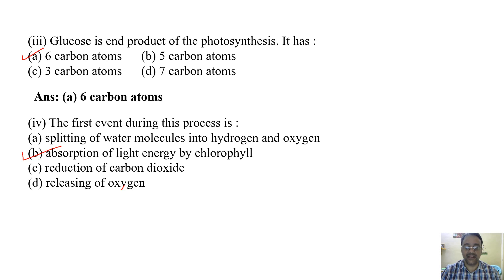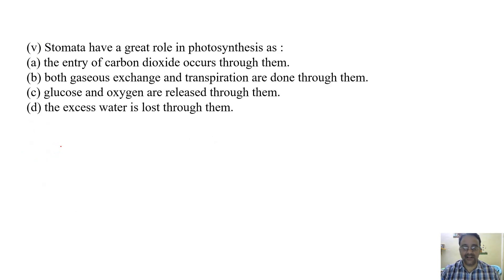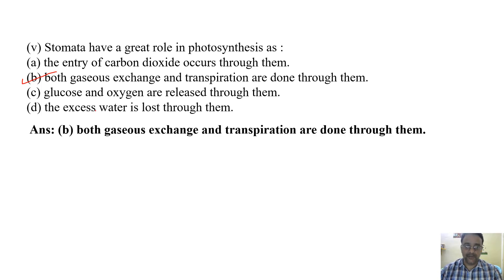Now moving towards the last question: Stomata have a great role in photosynthesis as - (a) the entry of carbon dioxide occurs through them, (b) both gaseous exchange and transpiration are done through them, (c) glucose and oxygen are released through them, (d) the excess water is lost through them. Out of all these four, the correct answer is that both gaseous exchange and transpiration are done through them, so B is the correct answer.